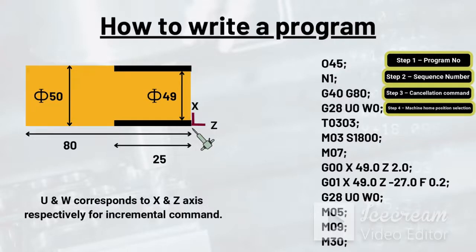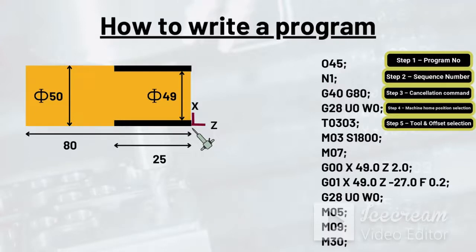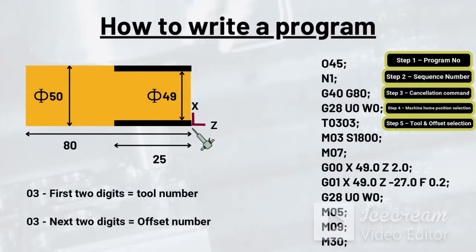The fifth step is tool and offset selection. The command for providing tool number and offset number is given by T0303, in which the first two digits, that is 03, is the tool number, assuming tool number 3 is used, and the next two digits 03 is the offset number.